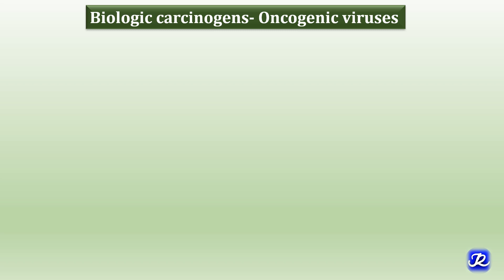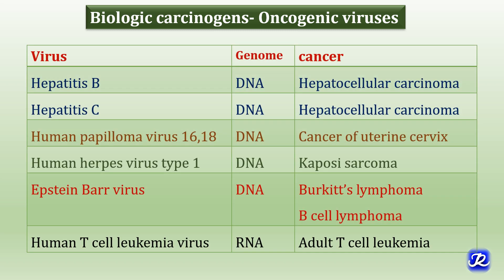The third type of carcinogens are biological carcinogens, which are oncogenic viruses. These viruses increase the risk of cancer by damaging DNA, causing chronic inflammation and weakening the immune system. Hepatitis B and C are DNA viruses which cause hepatocellular carcinoma. Human papilloma virus 16 and 18 are DNA viruses which cause cancer of the uterine cervix. Human herpes simplex virus type 1 is a DNA virus which can cause Kaposi's sarcoma. Epstein-Barr virus is a DNA virus which causes Burkitt lymphoma and B cell lymphoma. Human T cell leukemia virus is an RNA virus which can cause adult T cell leukemia.